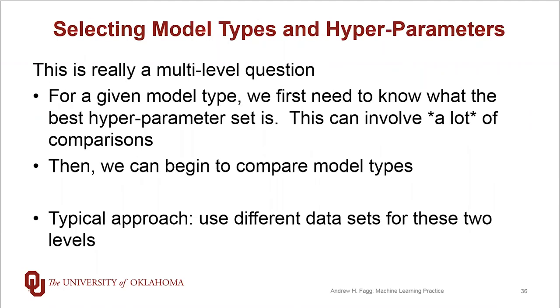So how this plays out in this question of hyperparameters and model types and how to select each of these, we really see this as a multi-level question. For a given model type, we first need to know what our best choice is for the hyperparameter set. And this kind of a question, depending upon the type of model can involve a huge number of comparisons. So this is the place where we have to be really very cautious. And then after this step, so now every model type has its own best hyperparameter set, then we can go about engaging our statistical processes to compare our model types. And the typical approach in dealing with this multiple level problem is to use different data sets for these two models for the evaluation process.